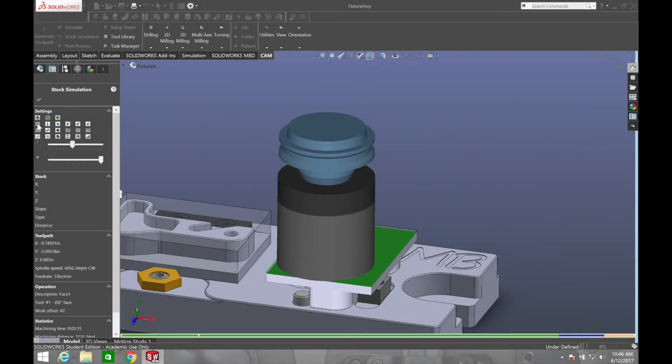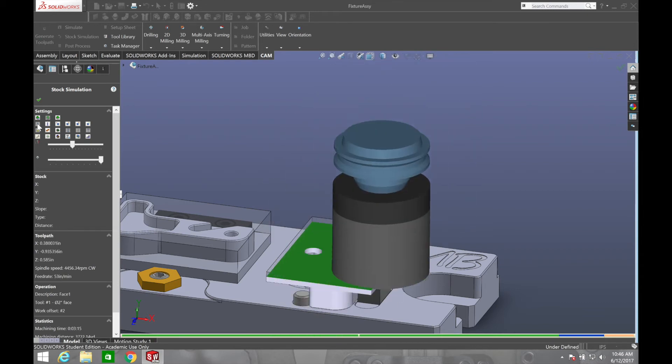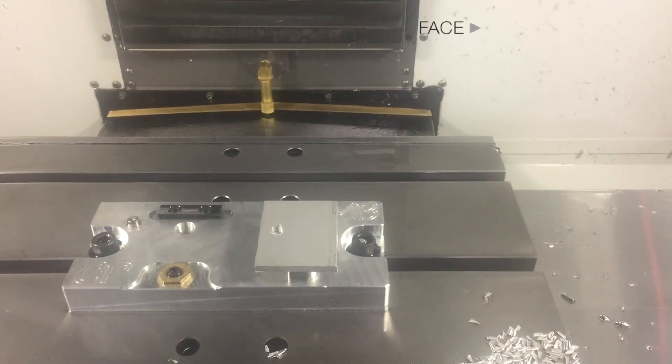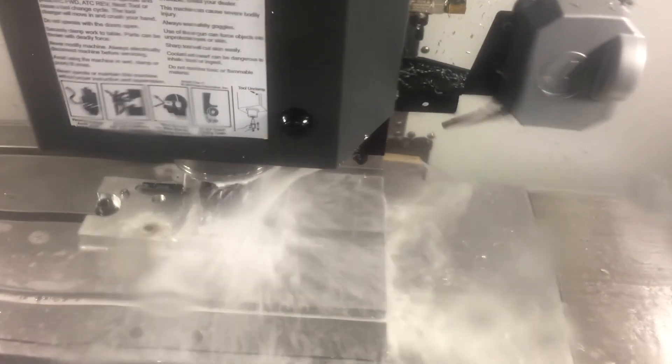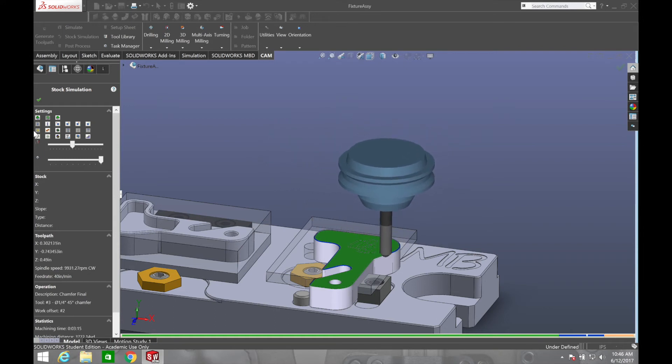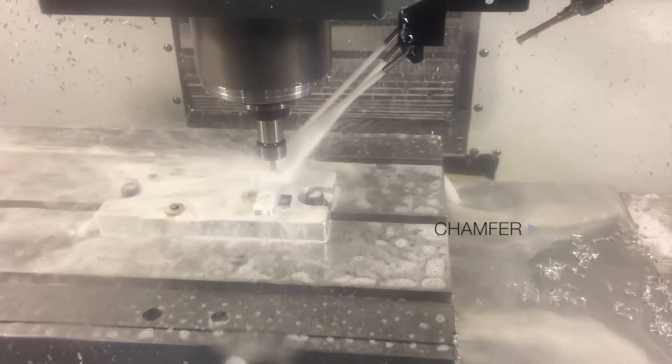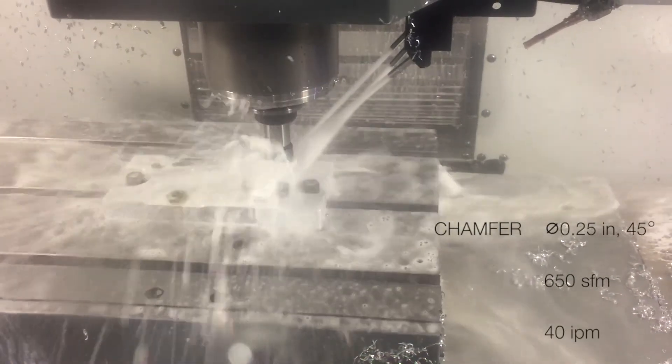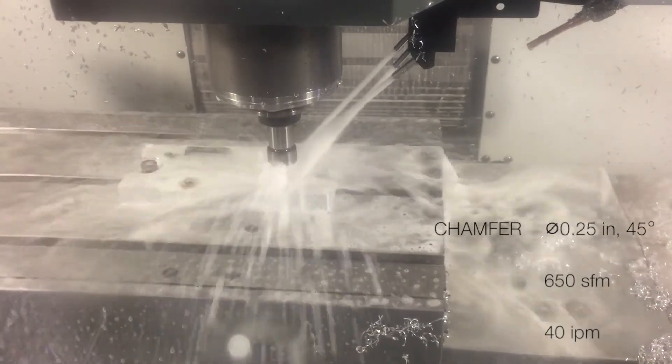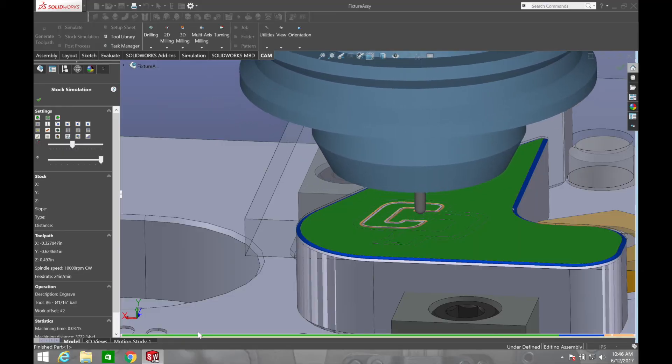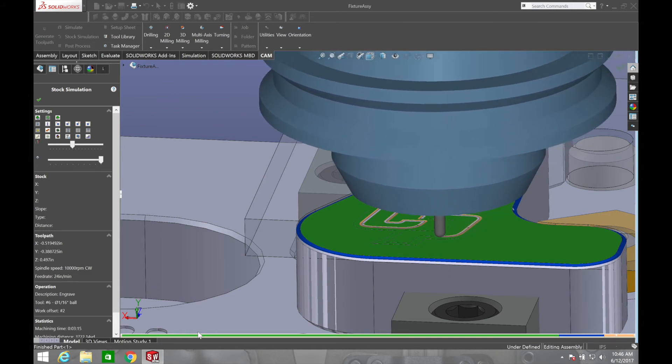A 2 inch diameter face mill will be used to face Op2. A ¼ inch diameter chamfer tool will be used to break all sharp edges. A ¼ inch diameter ball end mill will be used to engrave the Cal Poly logo, thus finishing Op2.